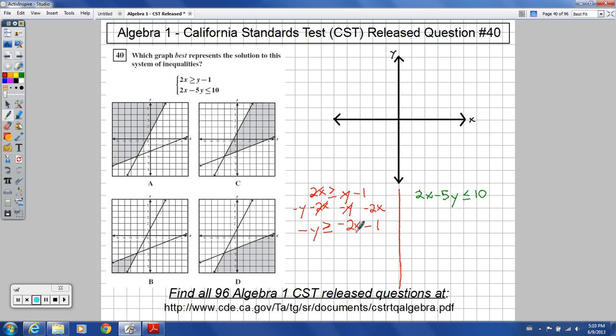And then I want to get this sign to be positive here. So I need to divide everything by negative 1. Or I could think of multiplying everything by negative 1. It would effectively do the same thing.